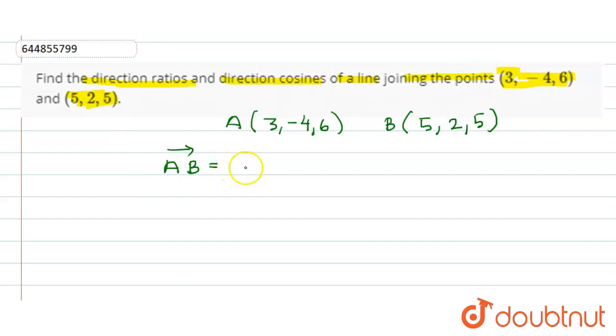5 minus 3 i cap plus 2 minus (-4) j cap plus 5 minus 6 k cap. So the components of the direction ratios of the required line